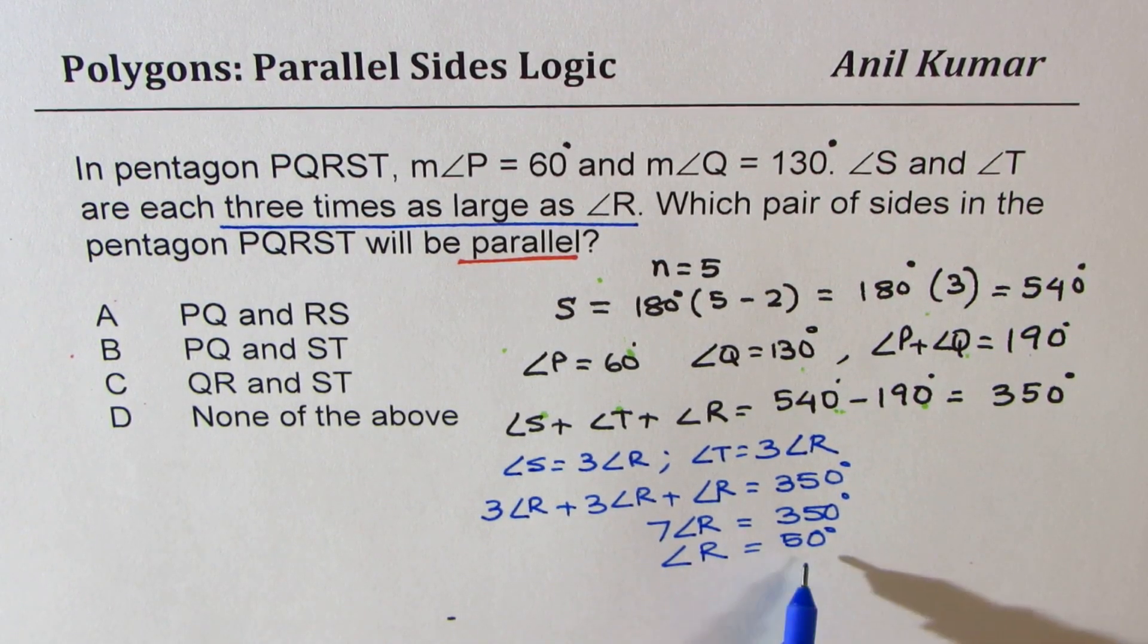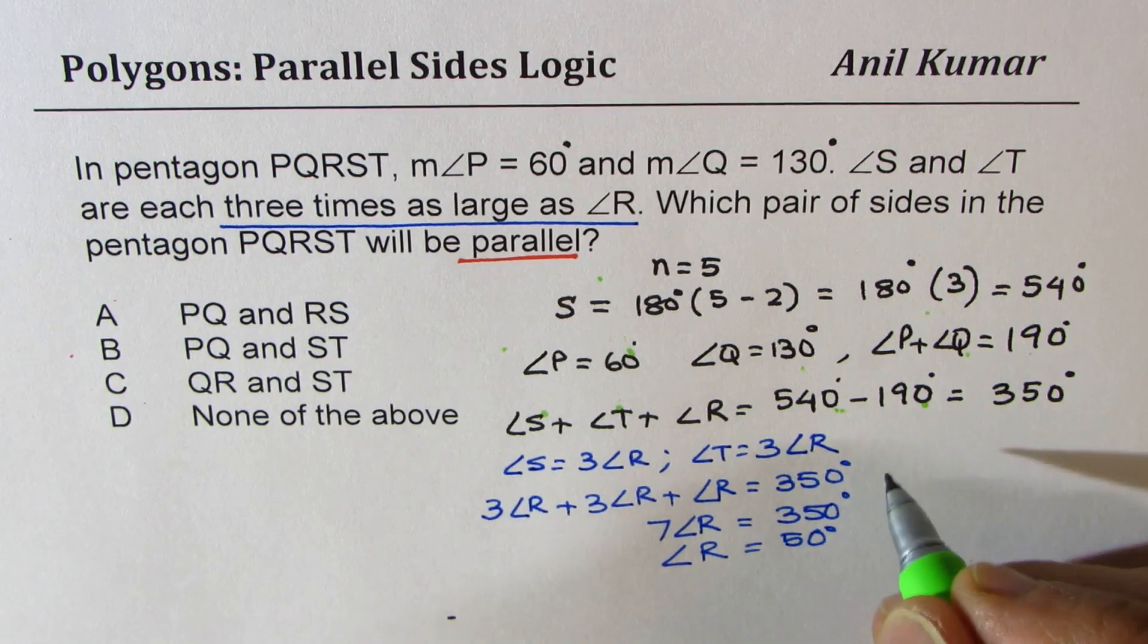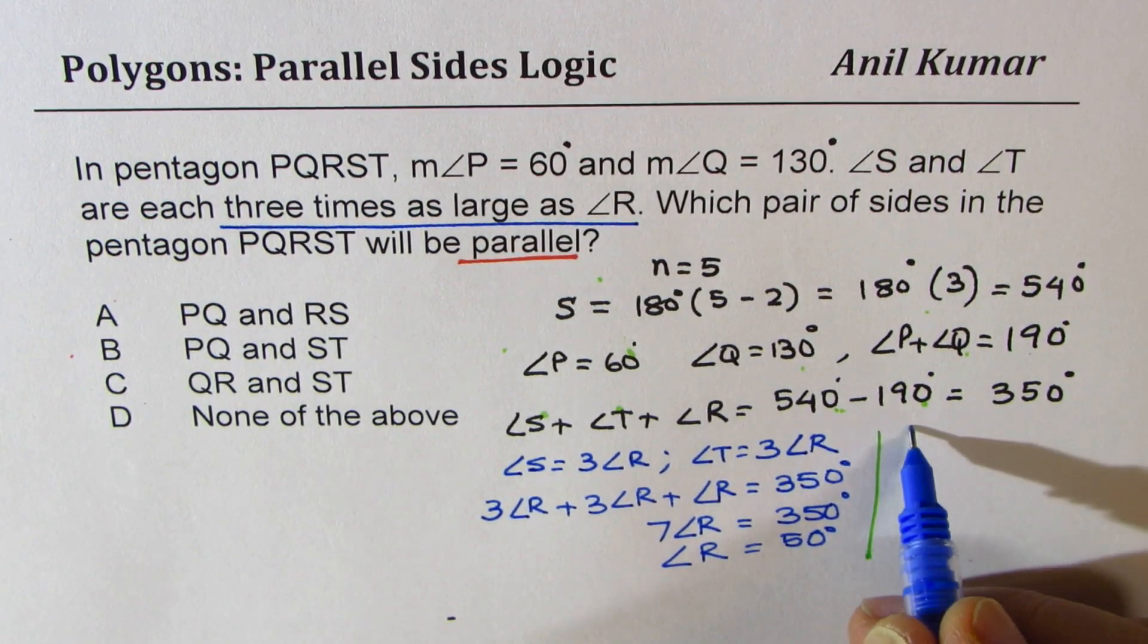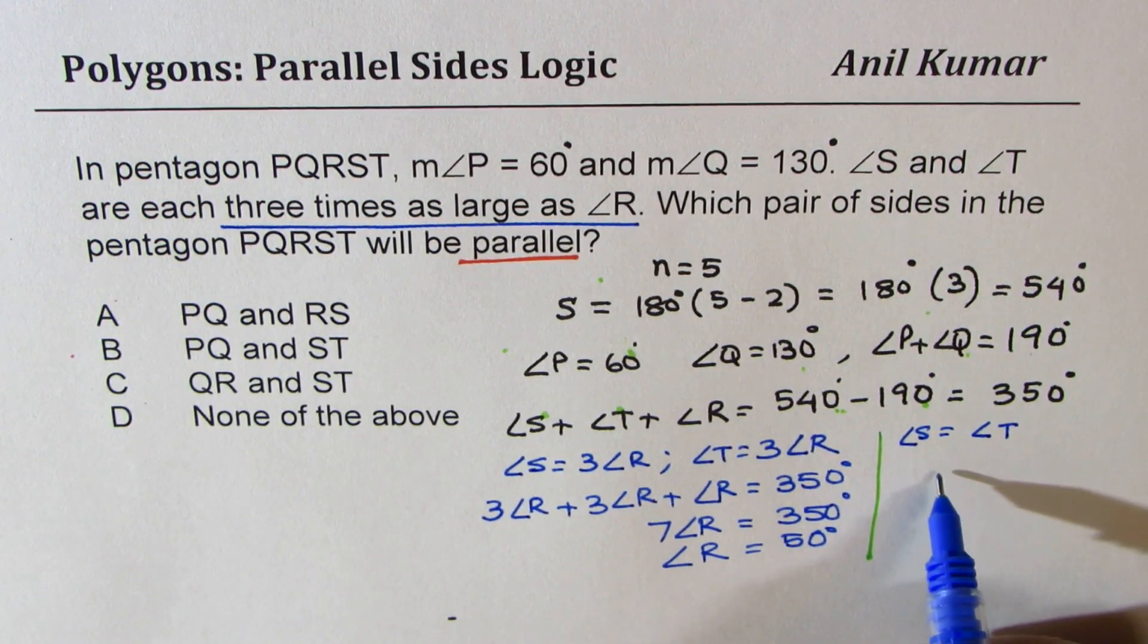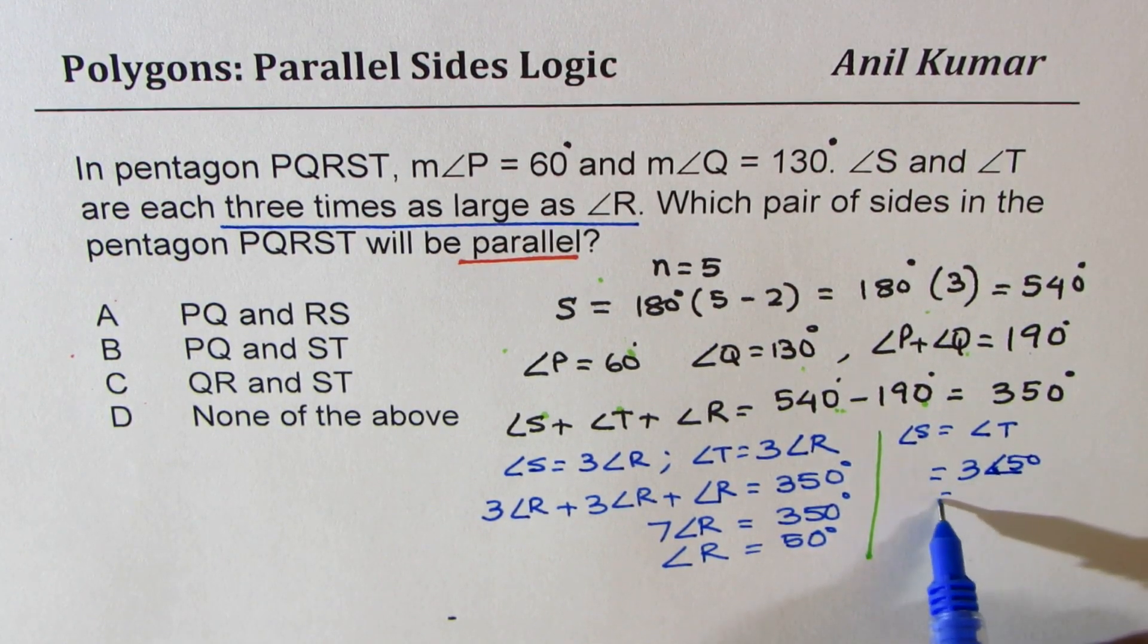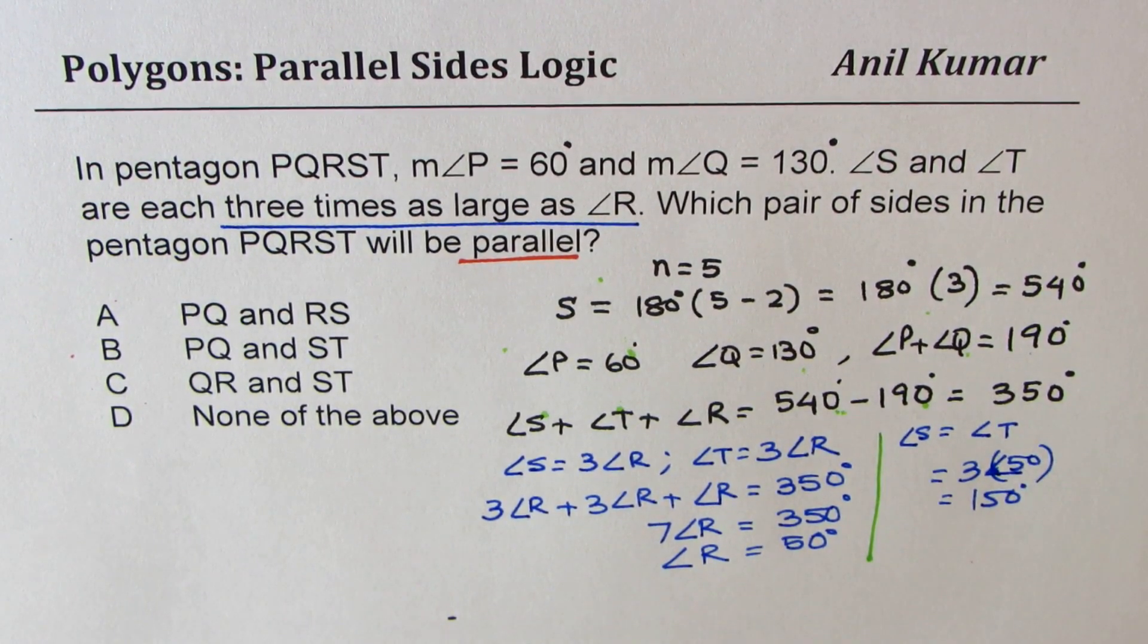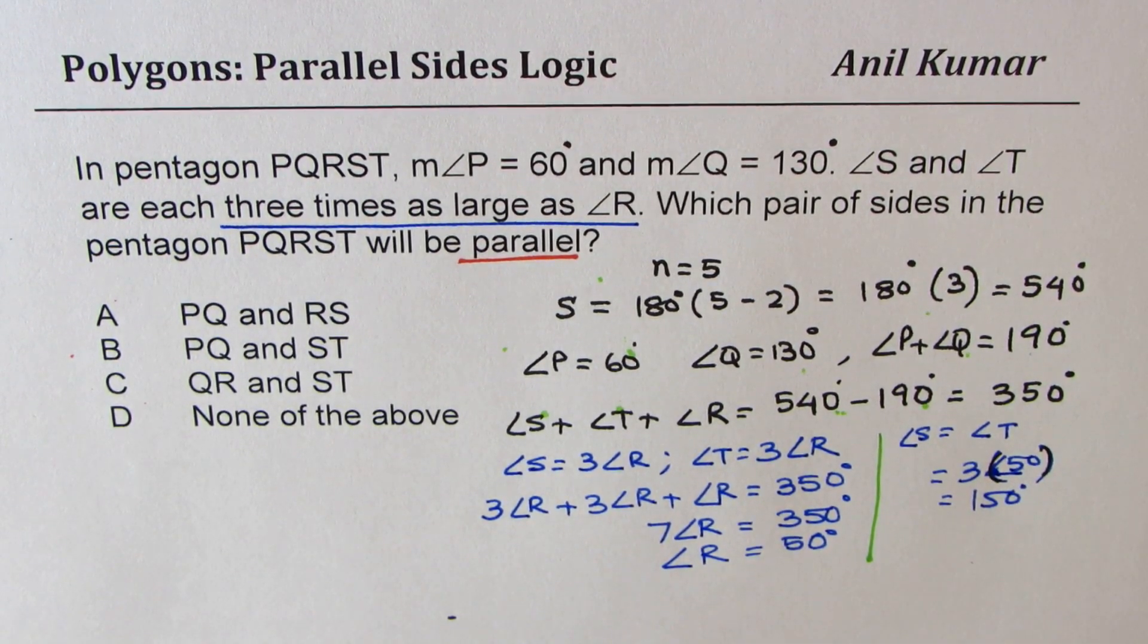Now if angle R is 50 degrees, then what are the other angles? So clearly, if angle R is 50, that means angle S is equal to angle T and both are equal to 3 times 50 degrees, which is 150 degrees. So we just multiply 3 times measure of angle T, which is 150 degrees.